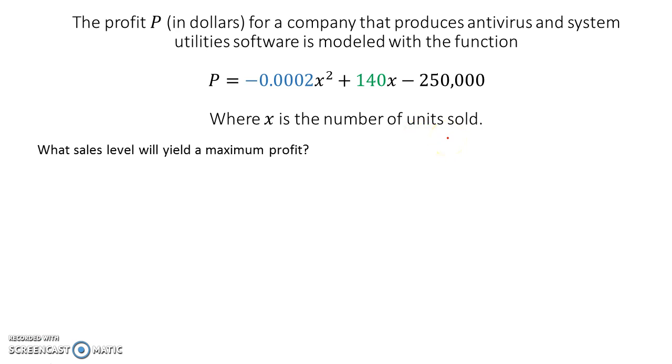The question in this problem is this: what sales level should yield the maximum profits? In other words, what they're asking is how many of these units should be produced, at least for a goal for this company, how many should be produced and sold to maximize their profits?